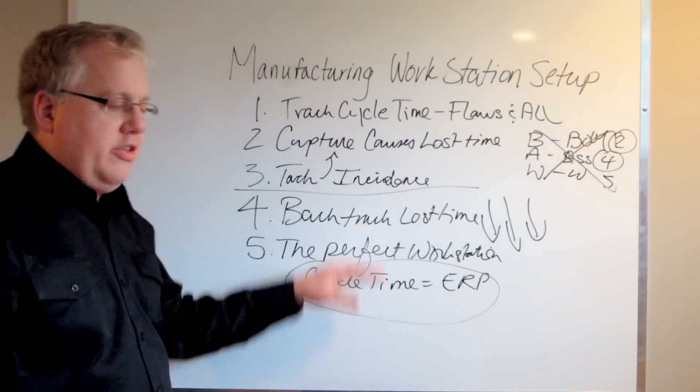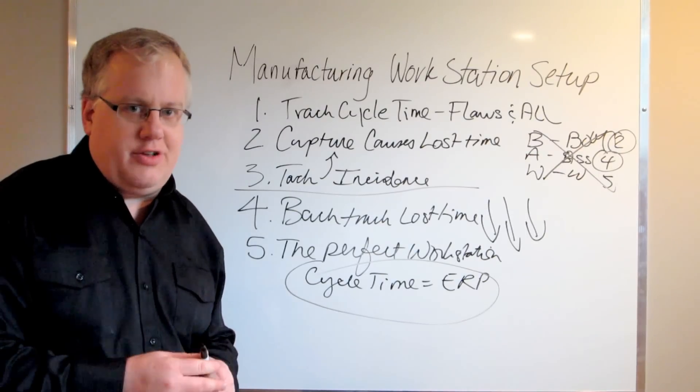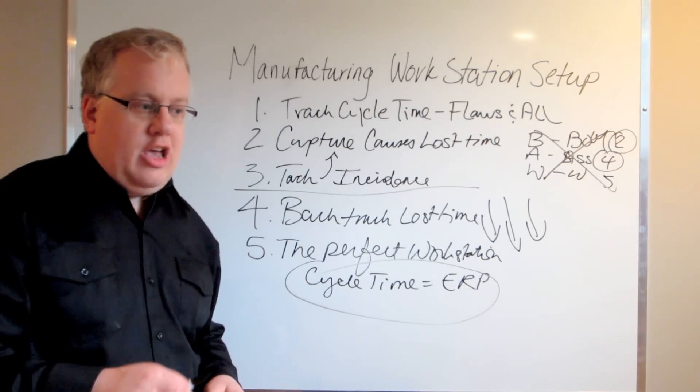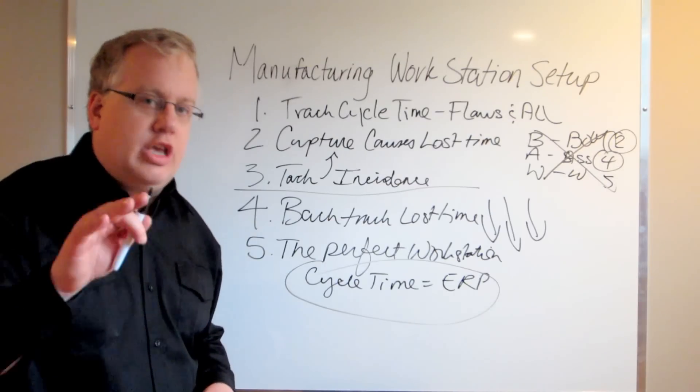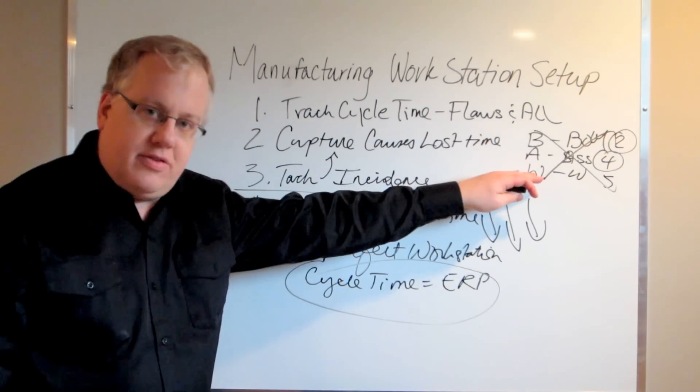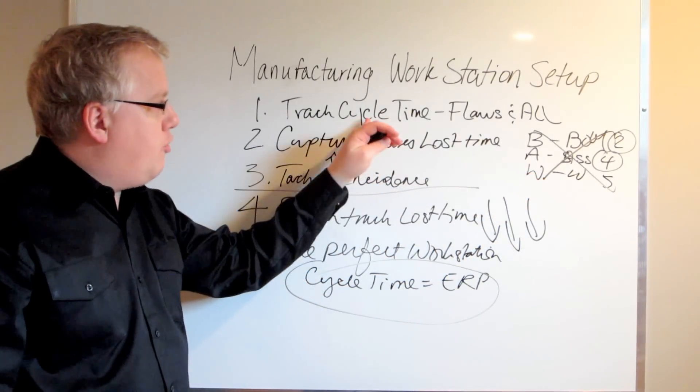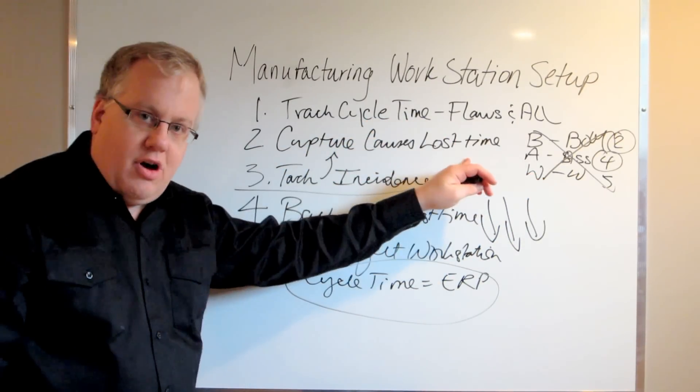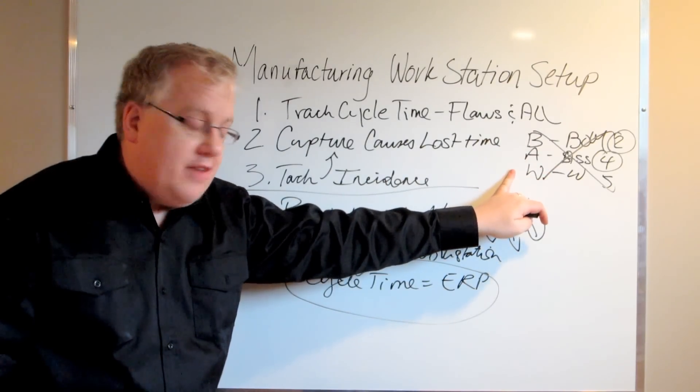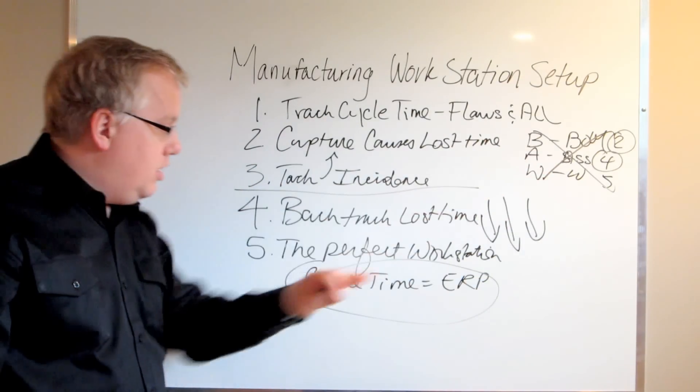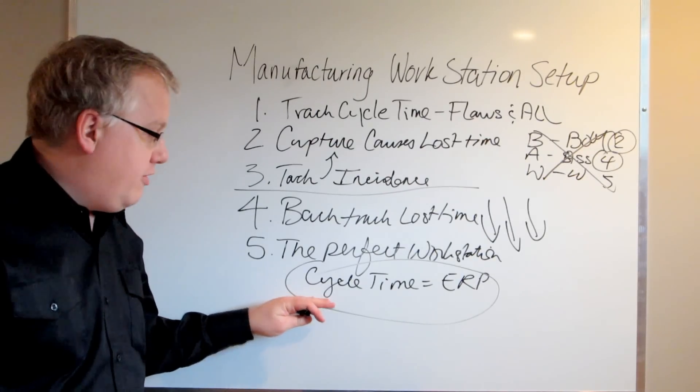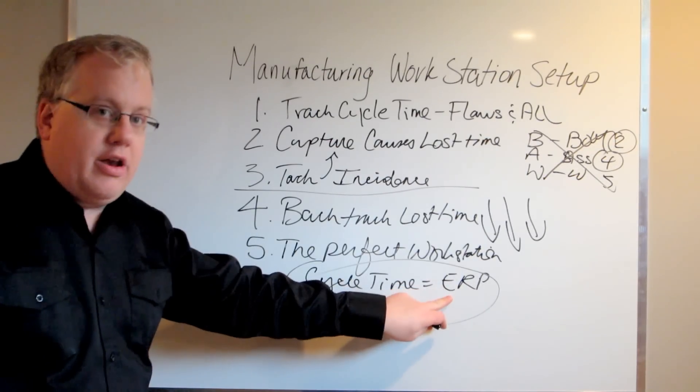You've got to do all of this before you can turn to anyone and say we know what the cycle times are. Because knowing what the cycle times are from your ERP system is nowhere near as impactful as knowing what they should be. No system can show you that unless you track the incidences of lost time, track these cycle times flaws and all, capture the causes, track the incidents, why it's happening, which one's happening most often. You eliminate them entirely, take a new set of cycle times, and now you've got your perfect workstation. That's the cycle time you can apply to your ERP system.